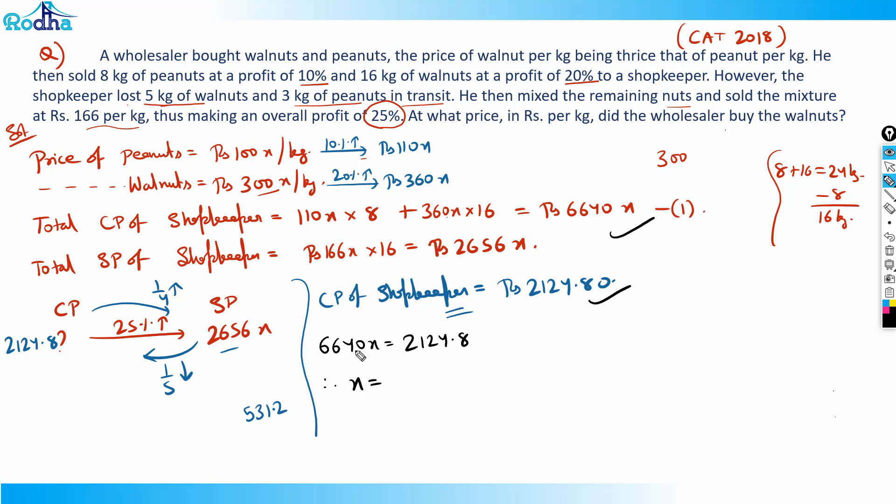If x is 0.32, I want the price of walnuts per kg. Price of walnuts was assumed to be 300x, so 300 into 0.32 equals Rs 96 per kg. That should be the answer to this question.